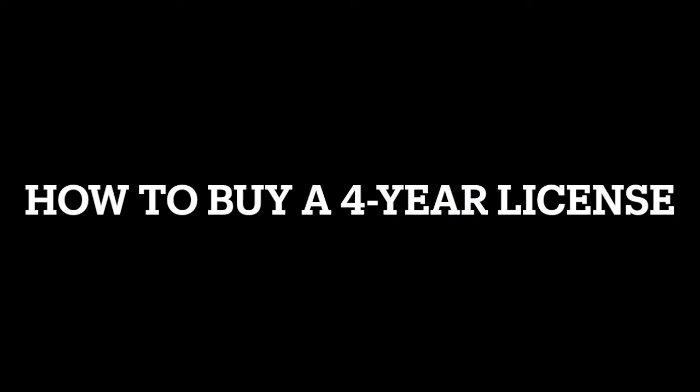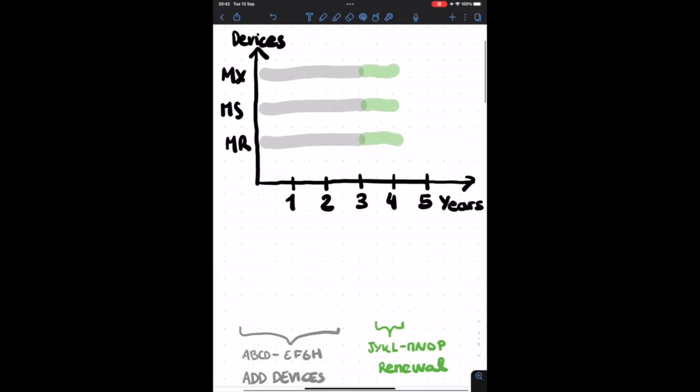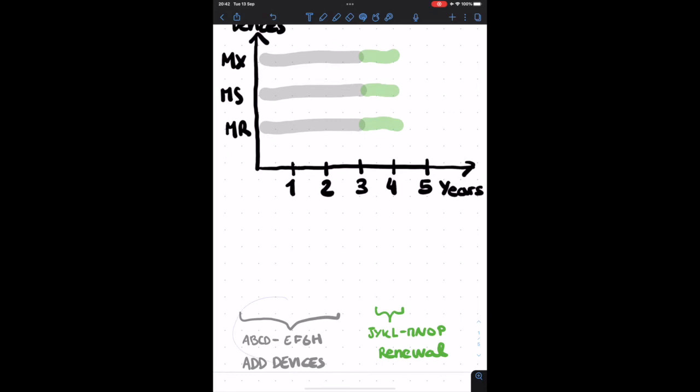This concept also brings us nicely to how to achieve a four-year license, which is an SKU that is not available in the Cisco CCW. What we need to do is, at the time of purchase, buy one license key that is going to include the MX, MS, MR for three years time, and we will add it into our organization in the mode of add devices because they never had a license before.